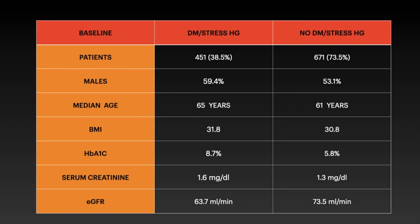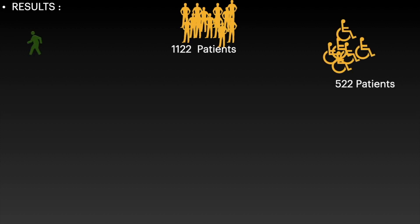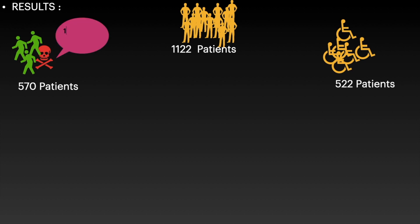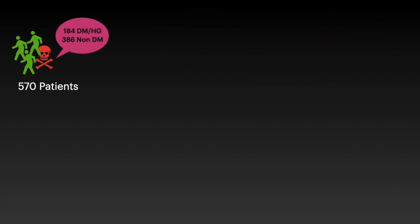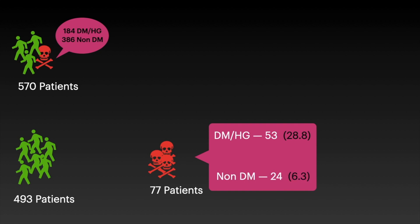Looking at the baseline characteristics, approximately 40% of patients had diabetes or stress hyperglycemia. The group with diabetes or stress hyperglycemia were predominantly male, obese, had uncontrolled hyperglycemia, and had decreased renal function. Among 1,122 patients, 522 were still admitted and 570 were either discharged or dead. Among these 570 patients, 184 had diabetes or hyperglycemia and 386 were non-diabetic. Of the 570, 493 were discharged healthy and death was seen in 77 patients.